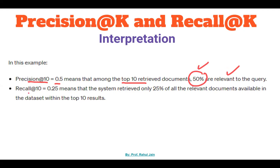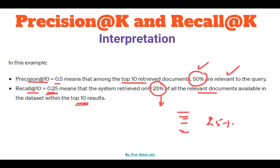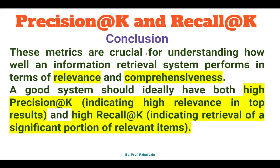Recall@10 is 0.25, meaning the system retrieved only 25 percent of all the relevant documents. Within the top 10 results, only 25 percent of the documents are relevant documents — that is recall effectiveness. And 50 percent accuracy means that out of the top 10 retrieved documents, 50 were relevant to our query. Only 25 percent are relevant to our query in terms of recall.